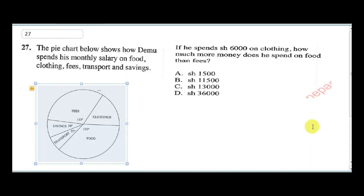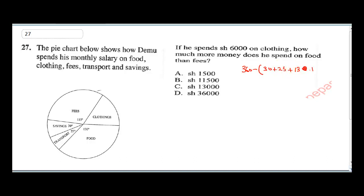Question 27 says the pie chart below shows how Demu spends his monthly salary on food, clothing, fees, transport and savings. If he spends 6000 shillings on clothing, how much money does he spend on food than fees? Clothing was mentioned, so he spent 6000 on clothing, but the degree for clothing was not given, so we need to look for that. The first thing we do is 360 minus the sum of the remaining: 30 plus 25 plus 130 plus 115. That's for clothing.